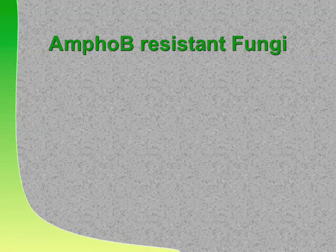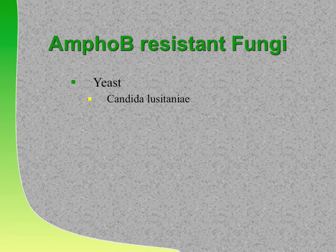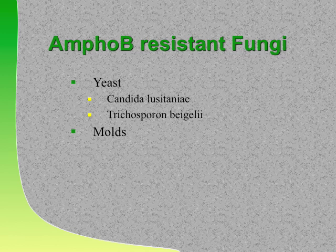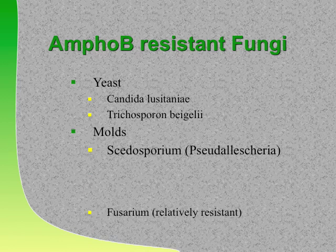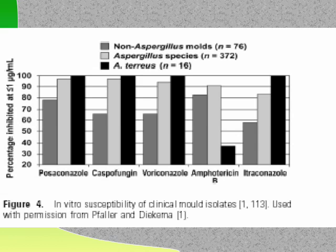Amphotericin B-resistant yeast: Candida lusitaniae and Trichosporon beigelii. Ampho-B resistant molds—a board question: Scedosporium (also known as Pseudallescheria), Fusarium, and notably Aspergillus terreus. Know the species of Aspergillus you're dealing with. For Fusarium, use combo therapy. The new azoles like posaconazole have great activity against many resistant molds.